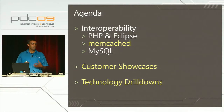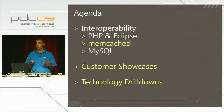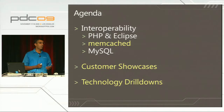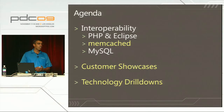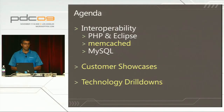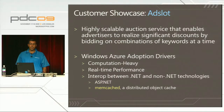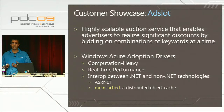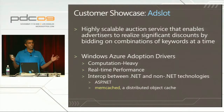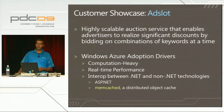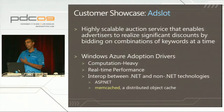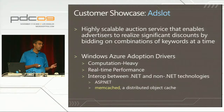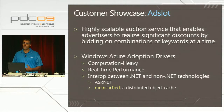Now we're going to dive into running open-source application components on Windows Azure, starting with Memcached - a very popular distributed memory cache used by sites like Facebook. We'll demonstrate this with a combination of a customer showcase and a technology drill down. One of our customers, AdSlot, is building a highly scalable auction service. The key differentiator is that it helps advertisers save money by bidding on combinations of keywords at a time instead of single keywords. This is very computation heavy, they need real-time computation results, and they need interoperability between .NET and non-.NET technologies - specifically between ASP.NET and Memcached.